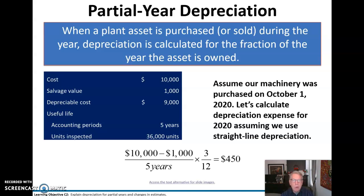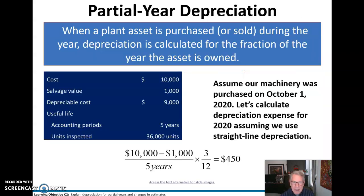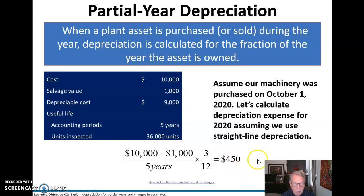When a plant asset is purchased or sold during the year, depreciation is calculated for the fraction of the year the asset is owned. Using the same example we used before, for straight line depreciation we would have $1,800 for the year, but we only used it for three months — October, November, and December — because we bought it October 1st. So three months of $1,800 gives us $450 depreciation expense for 2020.